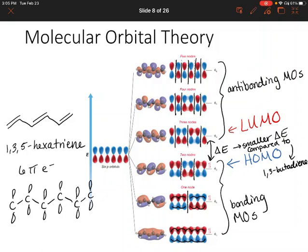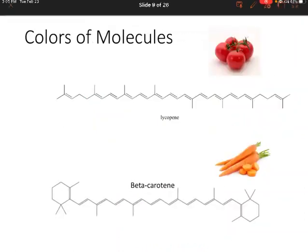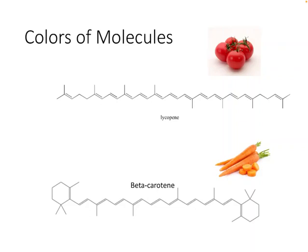Let's talk about other conjugated pi systems and how these energy differences can affect them. The first one is lycopene, which we saw on the first slide in the last lecture. Lycopene is responsible for the red color in tomatoes. Below that we also have another molecule with a conjugated pi system called beta-carotene, which we actually saw in our spinach lab. Spinach does contain some beta-carotene, and this molecule produces an orange color — it's responsible for the orange color in carrots.